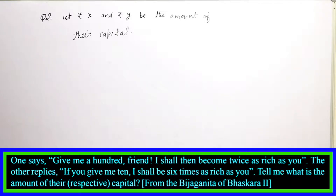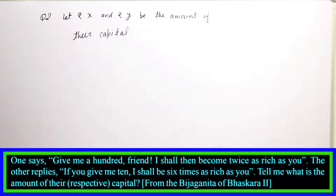Tell me what is the amount of their respective capitals. One says: if you give me 100 rupees, I shall become twice as rich as you. And the other says: if you give me 10 rupees, I shall be six times as rich as you. First of all, we must find out how many amounts of capital each has.